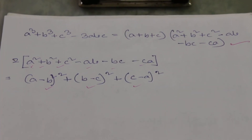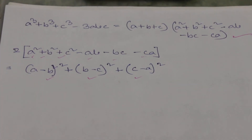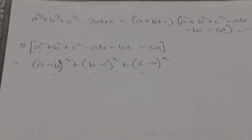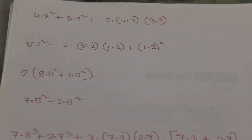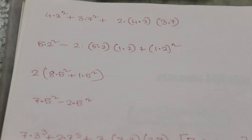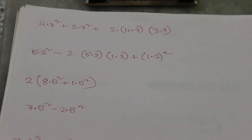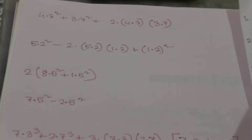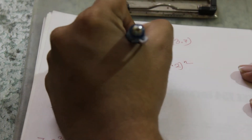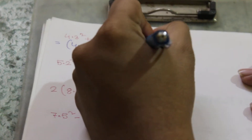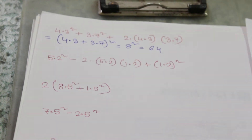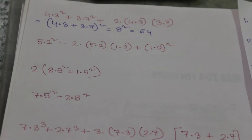Let's take some examples. The first one is 4.3 square plus 3.7 square plus 2 into 4.3 into 3.7. This matches the first formula — a square plus 2ab plus b square — so we write it as (4.3 + 3.7) whole square, which equals 8 square, and the result is 64. This is so simple.